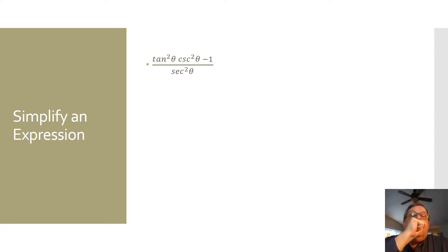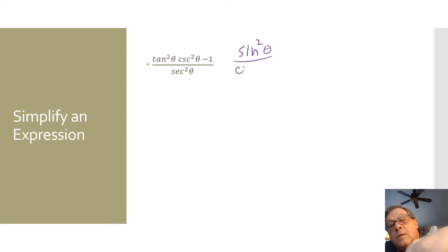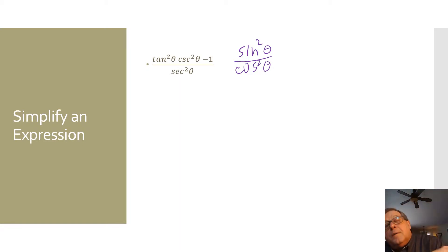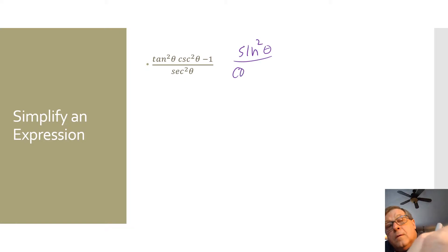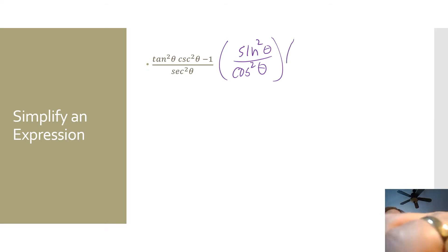The tangent squared of theta — that is a quotient identity. So we can say that this is the sine squared of theta over the cosine squared of theta. And that's times the cosecant squared of theta, which we'll rewrite as 1 over the sine squared of theta.